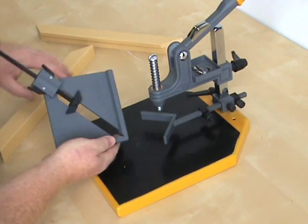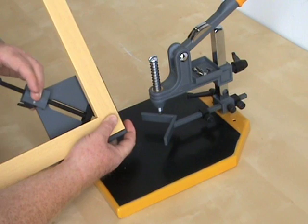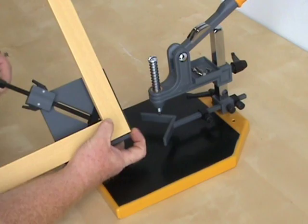This is the frame clamp. The moulding is positioned one short and one long length in the clamp. Then the quick action screw is adjusted to make sure they're held and there's a good close joint line.